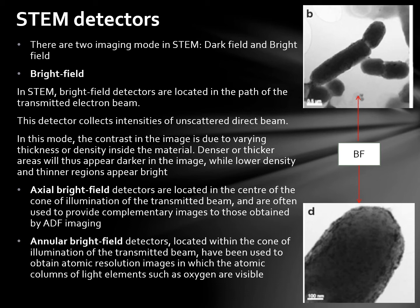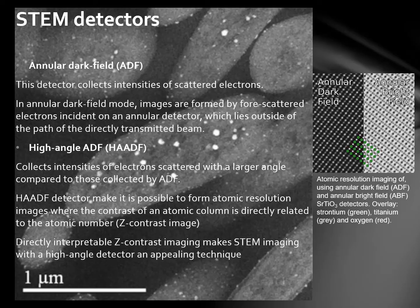Annular bright field detectors located within the cone of illumination of the transmitted beam have been used to obtain atomic resolution images in which the atomic columns of light elements, such as oxygen, are visible. ADF detectors collect intensities of scattered electrons. In annular dark field mode, images are formed by scattered electrons incident on an annular detector which lies outside the path of the directly transmitted beam. High angle ADF collects intensities of electrons scattered with a larger angle compared to those collected by ADF. HAADF detectors make it possible to form atomic resolution images where the contrast of an atomic column is directly related to the atomic number.